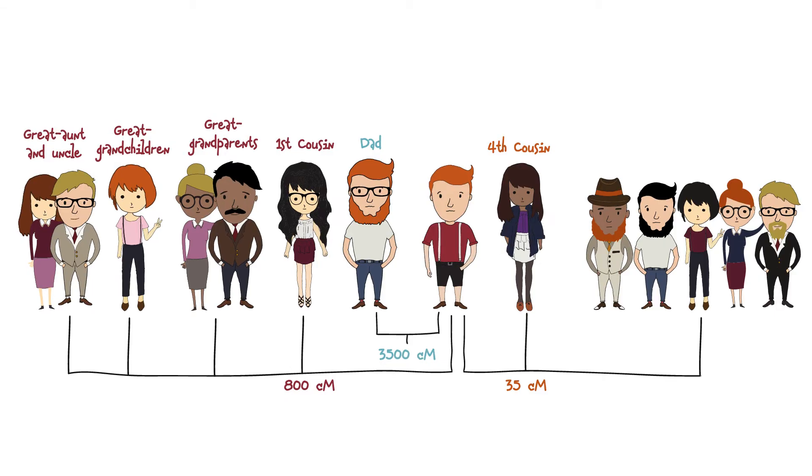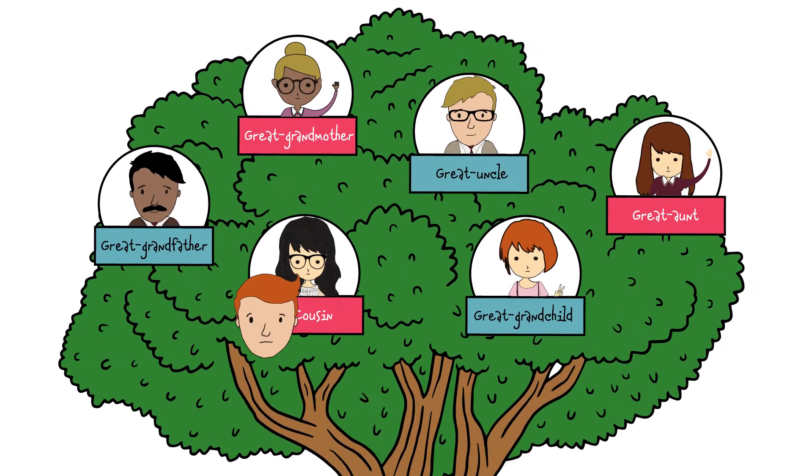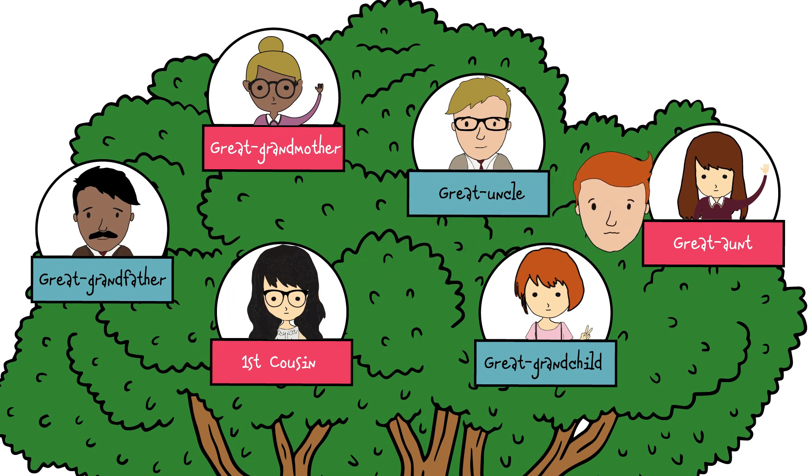DNA can tell us a lot about our relationships, but it can't tell us everything. Like whether that 800 cM match is your first cousin, or your great aunt, or, well, you get the idea.